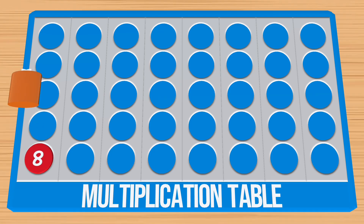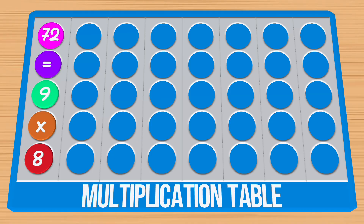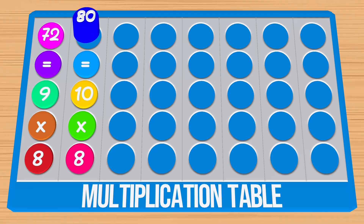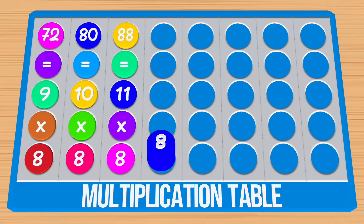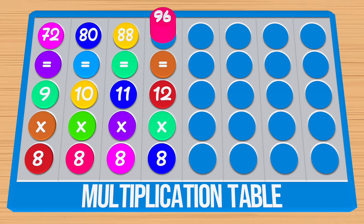8 times 9 is equal to 72. 8 times 10 is equal to 80. 8 times 11 is equal to 88. 8 times 12 is equal to 96.